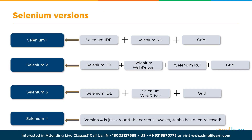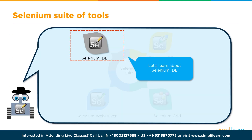Regarding version history: Selenium 1.0 had IDE, RC, and Grid. RC had disadvantages and was on a path of deprecation while WebDriver was emerging. Selenium 2.0 introduced an earlier WebDriver version alongside RC. From Selenium 3.0 onwards, RC was completely removed and WebDriver took its place. A Selenium 4.0 version is also coming with features like W3C WebDriver standardization, improved IDE, and improved Grid.